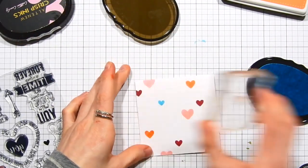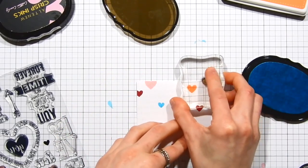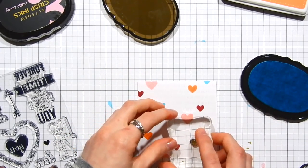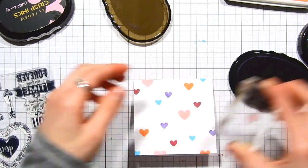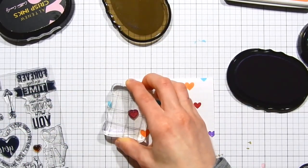I'm stamping onto a three and a half inch square card base, and I'm doing the same exact technique by stamping the text background onto the white cardstock and now I'm taking the hearts and stamping these all around the background.